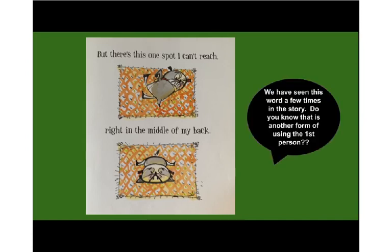There's a word in here that we've already seen a few times in the story — 'my.' Did you know that's another form of using the first person? When we talk about ourselves, we would say 'my,' 'me,' 'myself.'